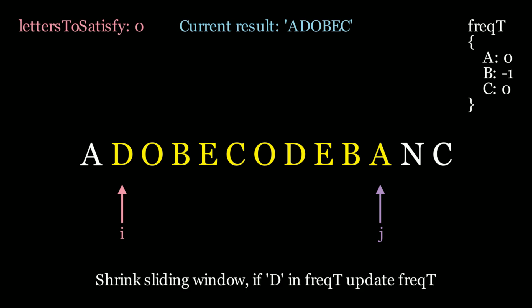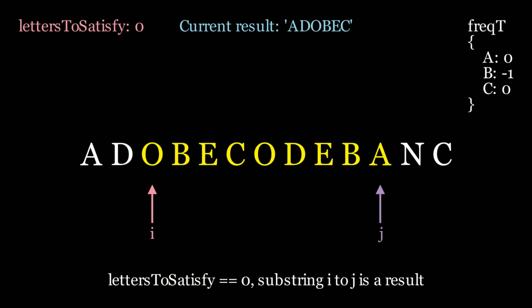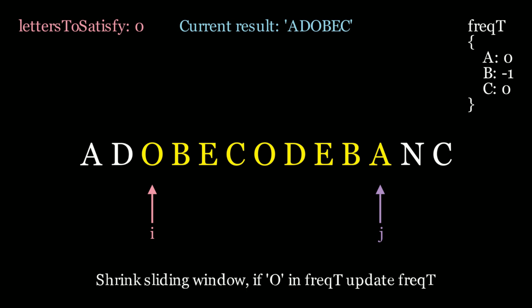Now we need to shrink the sliding window. We found a solution; let's move i closer to j to find a smaller solution. d is not in the frequency hash map, so we don't need to update anything. We move on to o. Every time we move i, we ask: is letters to satisfy still equal to 0? We still have zeros and negative values in our hash map — we still satisfy letters a, b, and c. o is not in our hash map, so we shrink the window for free.